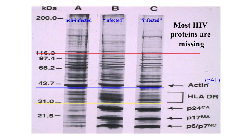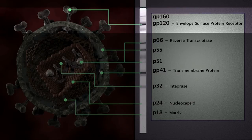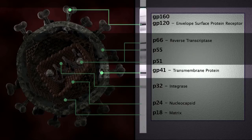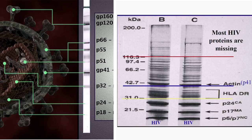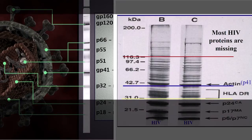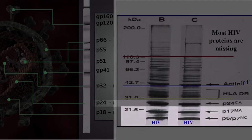Why didn't they label proteins higher than 41? Many HIV experts accept that the proteins of 120 and 160 are polymers of P41 — three P41s joined together make 120, four make 160. They admit there is evidence that proteins above 24,000 molecular weight are cellular proteins. Proteins below P17 — P6, P7 — are subunits of proteins with higher molecular weight. So we are left with one protein: P24.